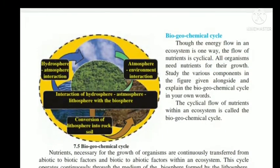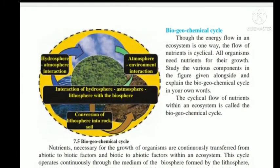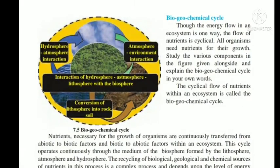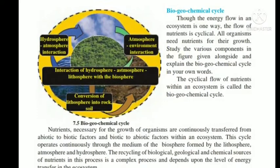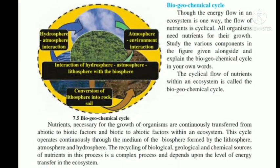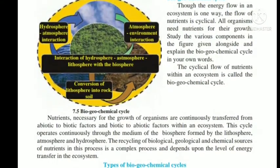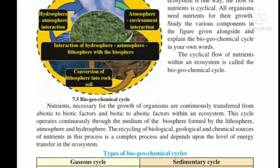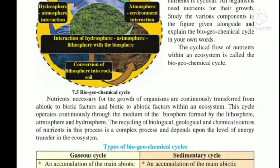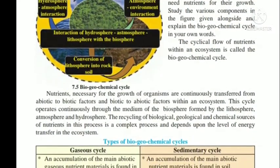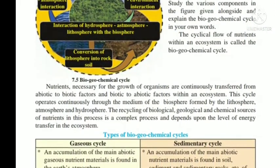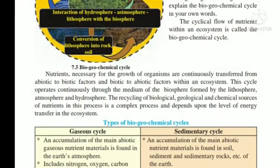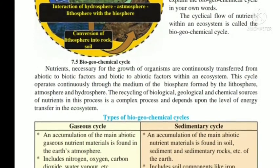Hello students, in standard 9 science chapter 7 — Energy Flow in an Ecosystem — we are going to learn about the biogeochemical cycle. The cycle flow of nutrients within an ecosystem is called a biogeochemical cycle. The word 'bio' means biology, 'geo' means geographical, and 'chemical' means chemicals — all united in this cycle. The biogeochemical cycles provide different types of nutrients to all living organisms for their growth and development.